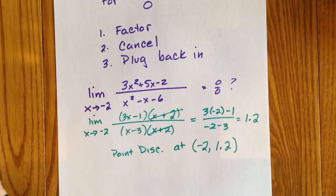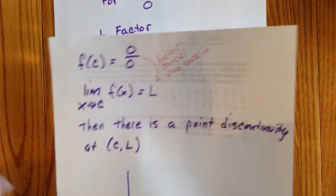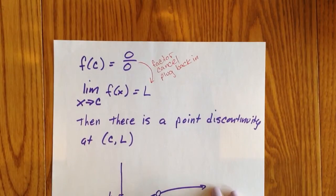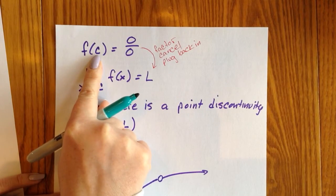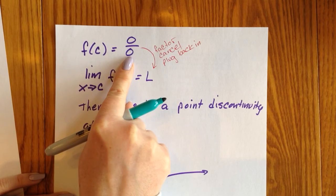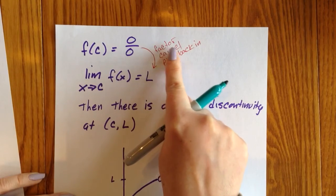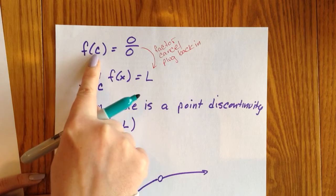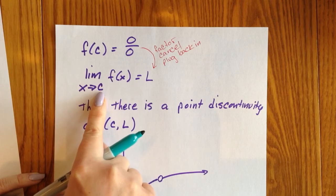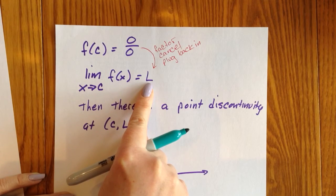Let's take some notes. If we attempt to fill in a number, directly substituting in, and we get zero over zero, we will then factor cancel, plug back in to evaluate the limit.